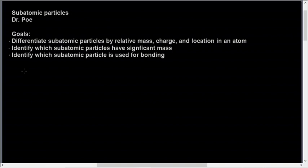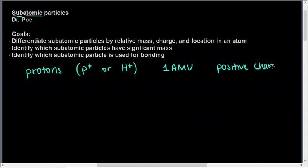We've got three subatomic particles that we're talking about. When we say subatomic, that means it's smaller than an atom. Atoms are made of protons, which can be abbreviated P+ or H+. They have a mass of one atomic mass unit and a positive charge, which is why they have that plus sign.